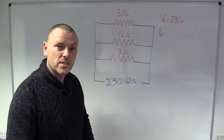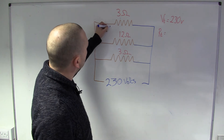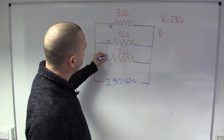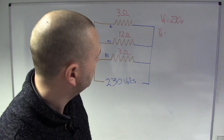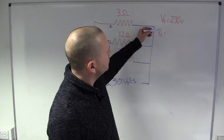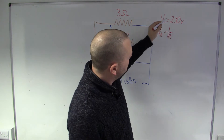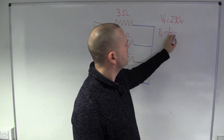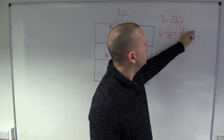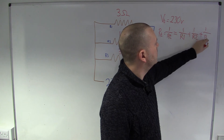Let's just give these resistances a label. I'm going to call this R1, R2, and R3, just like we did with the series circuit, but the equation's a little bit different. It's 1 over R1, plus 1 over R2, plus 1 over R3.